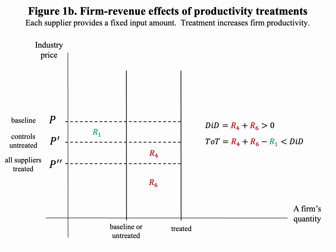Now let's look at market-wide treatment. Price falls even further. The controls are contaminated, but the contamination is a big part of what we want to know. We call the effect of the market-wide treatment epsilon, or a scale effect. This is yet a third number — namely R6 minus the two green areas. It can have the opposite sign of DID. Indeed, it will if industry demand is price inelastic. A quite general result is that the scale effect is outside the range spanned by DID and TOT.